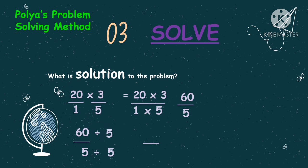Then simplify your answer if possible. We can directly divide 60 by 5, or divide them by the GCF. The GCF of 60 and 5 is 5, so we divide both by 5. 60 divided by 5 is 12, and 5 divided by 5 is 1. Then 12 divided by 1 is 12. So the final answer is 12.